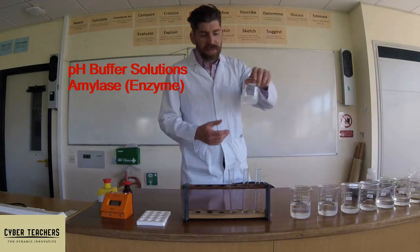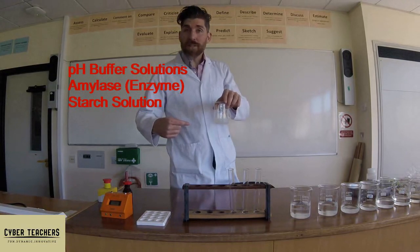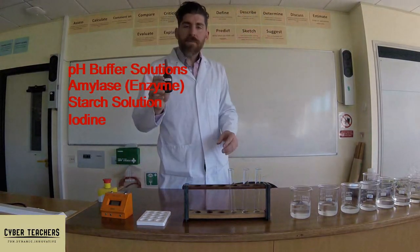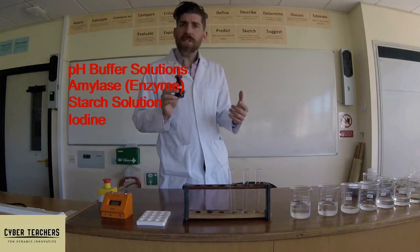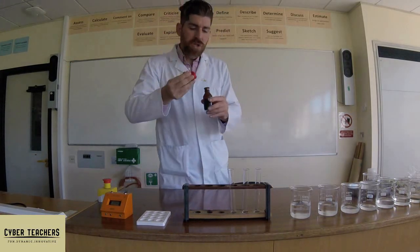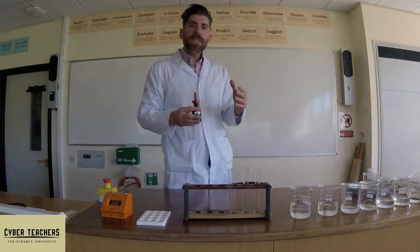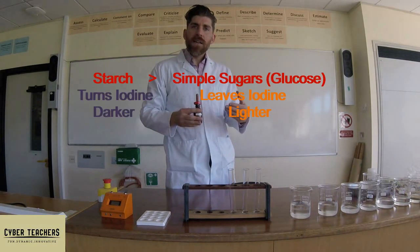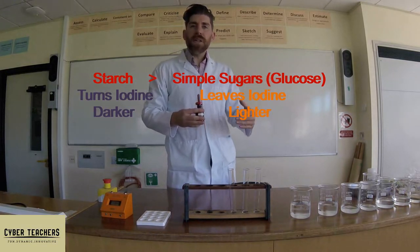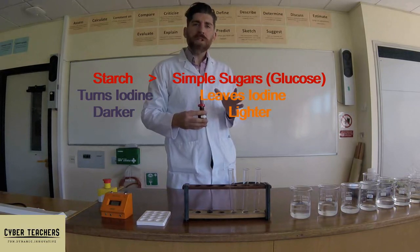We've also got some starch solution, because it's the starch that gets digested down by the amylase into simple sugars. We also need an indicator of how the reaction is going, and the indicator we need is iodine, because iodine detects starch. If I add iodine to starch it goes from its orangey-brown colour to a blue-black colour, which indicates the presence of starch. If the starch hasn't been digested it turns the iodine blue-black; if it has been digested into glucose, the iodine remains orangey-brown.